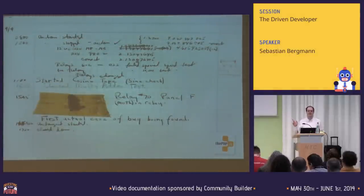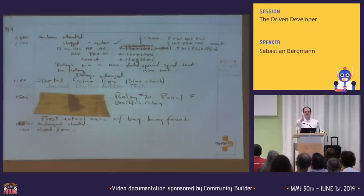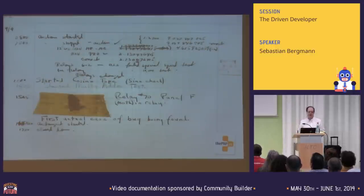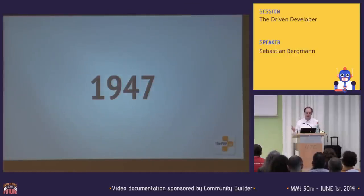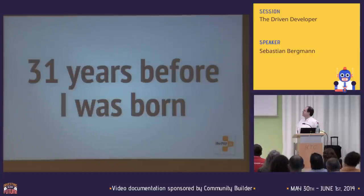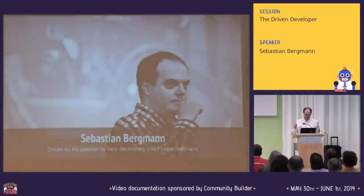We are going back in time. This is the bug — the first actual case of a bug being found. It's the famous lab log by Grace Hopper who in 1947 found a moth in her computer. The computer stopped working and allegedly this is where the term 'bug' for a problem in software comes from. 1947 — that's 31 years before I was born.